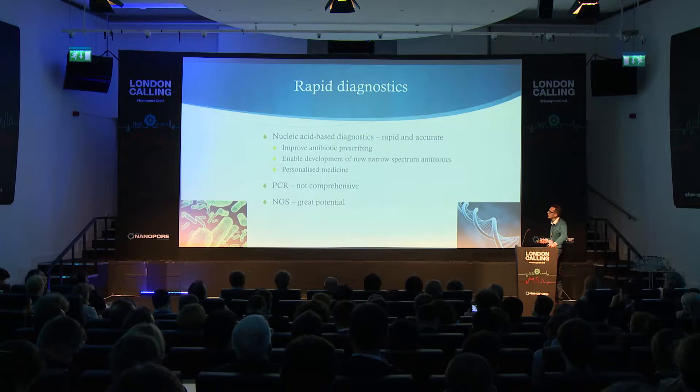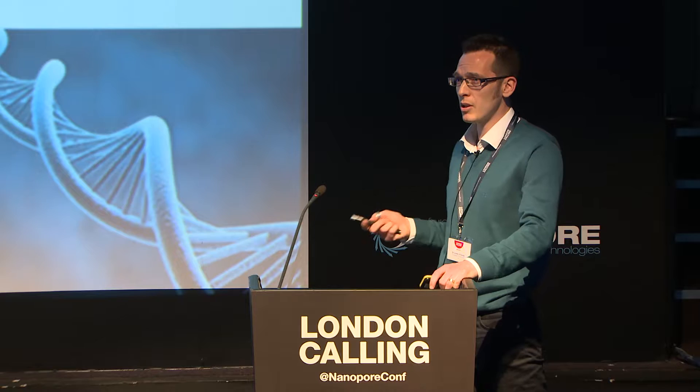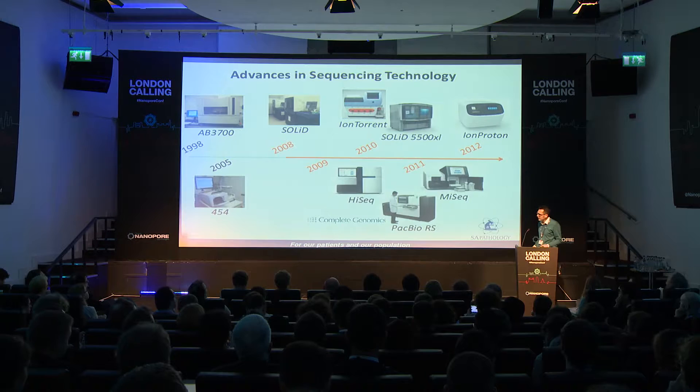So what can NGS do? It can improve antibiotic prescribing and enable the development of new narrow spectrum antibiotics. If you can detect what's in a patient sample quickly, you can use narrow spectrum antibiotics — and you can develop them and run clinical trials. This will all lead to personalised medicine in the future.